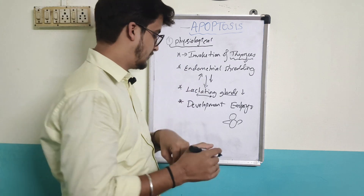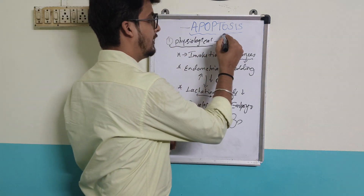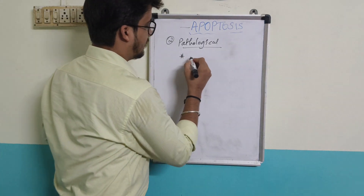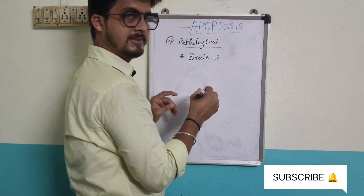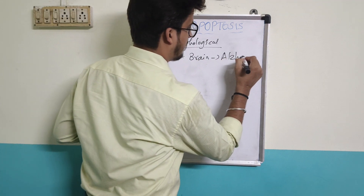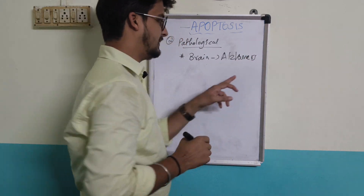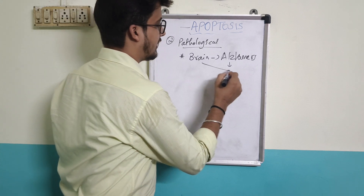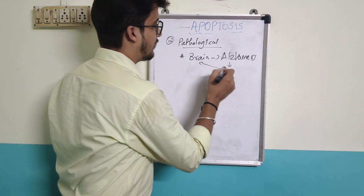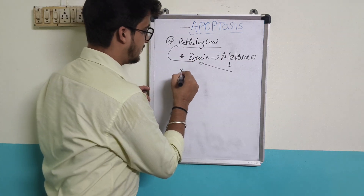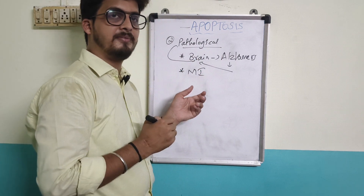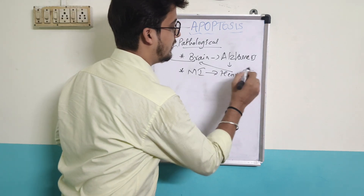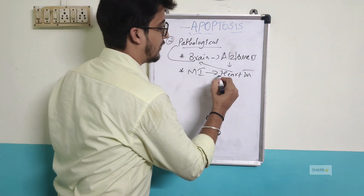All these come under physiological apoptosis. Next is pathological apoptosis. In the brain, conditions like Alzheimer's disease cause brain cells to die — that is one type of pathological apoptosis. The second one is myocardial infarction — during a heart attack, the heart muscles die due to loss of blood supply, which is also a type of pathological apoptosis.